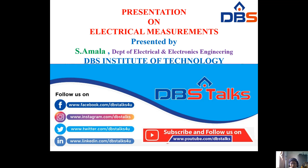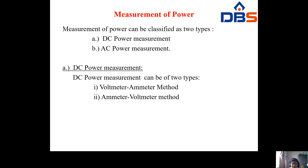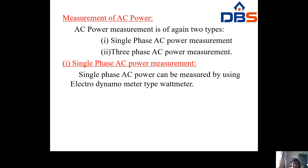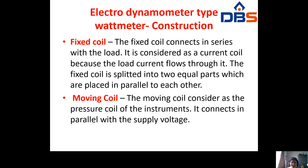The methods used for the measurement of AC power are discussed in this class. In previous classes we discussed measuring DC power by using the voltmeter and ammeter method. The AC power is of two types: single-phase AC power and three-phase AC power. In previous classes we discussed single-phase AC power. Now in this class we will be discussing how to measure three-phase AC power.